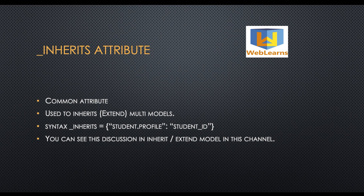The next attribute is underscore inherits. The difference is that you can inherit multiple models in a particular model using underscore inherits. The syntax is slightly different: you have to define the model name, then a colon, then the specific field name, then a comma, and you can add multiple model names. Examples are available in the description.